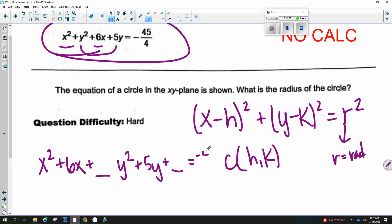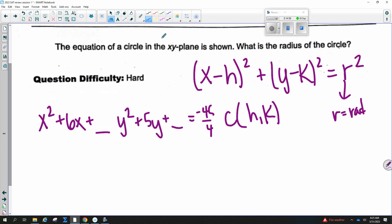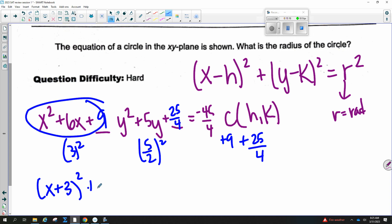So Y squared plus 5Y plus a space equals negative 45 fourths. We take half the middle number and square it. So I take half of this and square it. I take half of this and square it. So that's 25 fourths. I'm making these perfect squares. I also need to add these to the other side. I just made this a perfect square trinomial. So it factors (X plus 3) squared. I just made this a perfect square trinomial. And so it factors (X plus 5 halves) squared. Over here, I need common denominators. You got to multiply this by 4 over 4. So negative 45 plus 36 is 9.